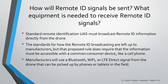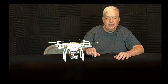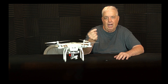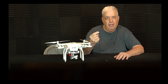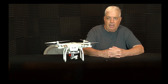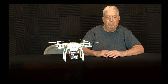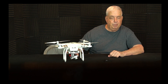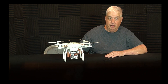How will the remote ID signals be sent? What do you need to implement remote ID? Standard remote ID must broadcast directly from the drone. The standard for how the broadcasting happens is left up to the manufacturer, but the proposed rule requires that the information must be accessible with a common consumer device like a cell phone. Manufacturers may use Bluetooth, Wi-Fi, or LTE — cellular towers — as a direct signal from the drone that can be picked up by phones or tablets in the field.